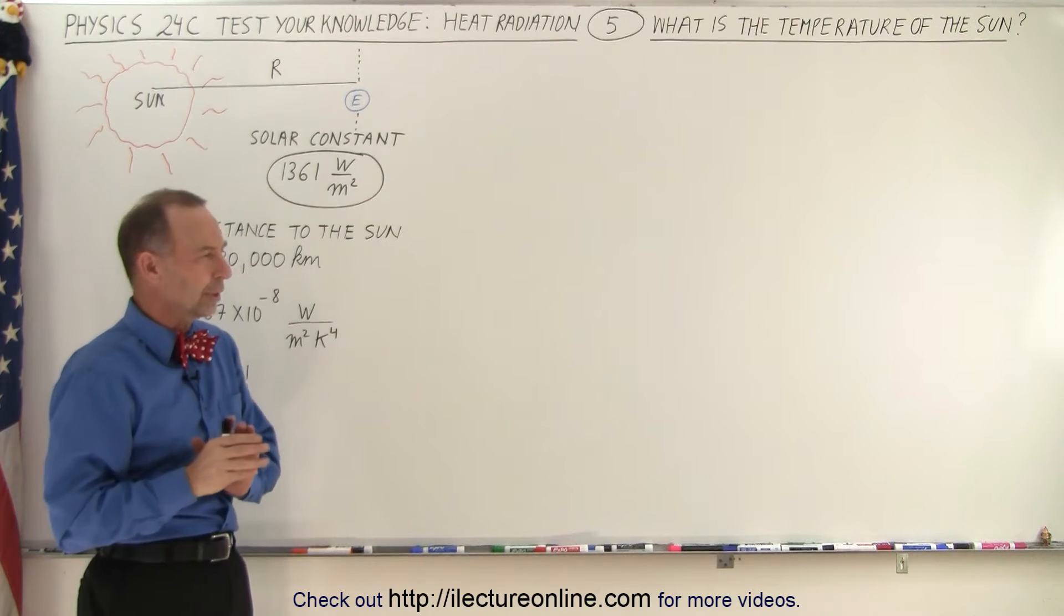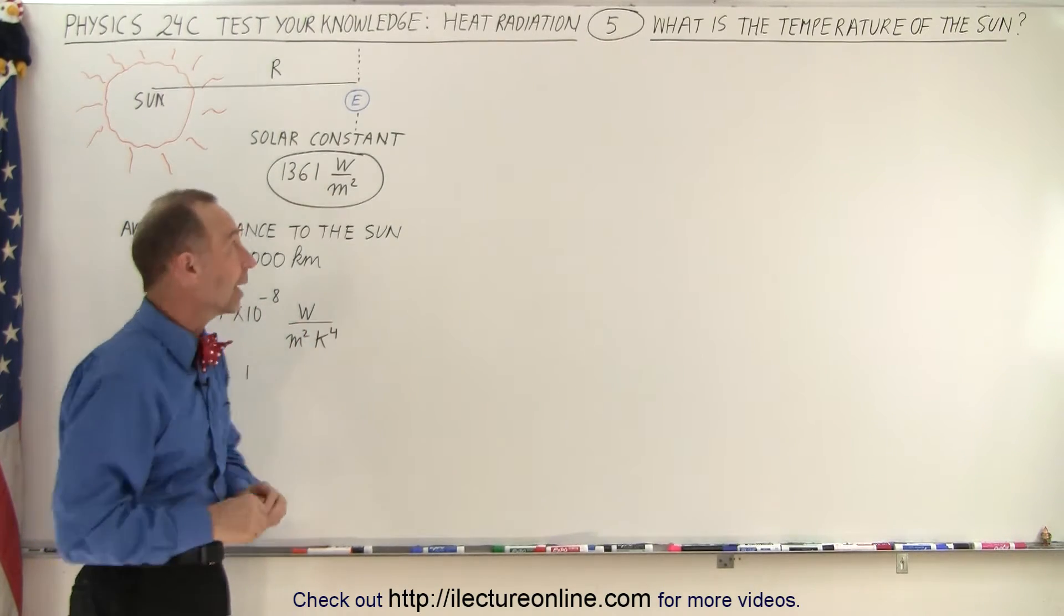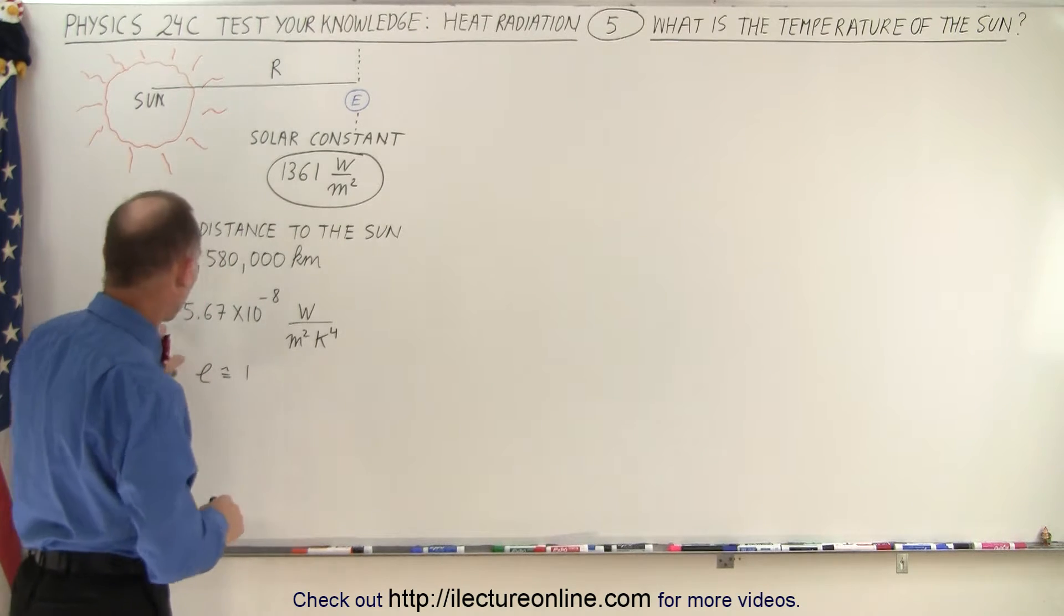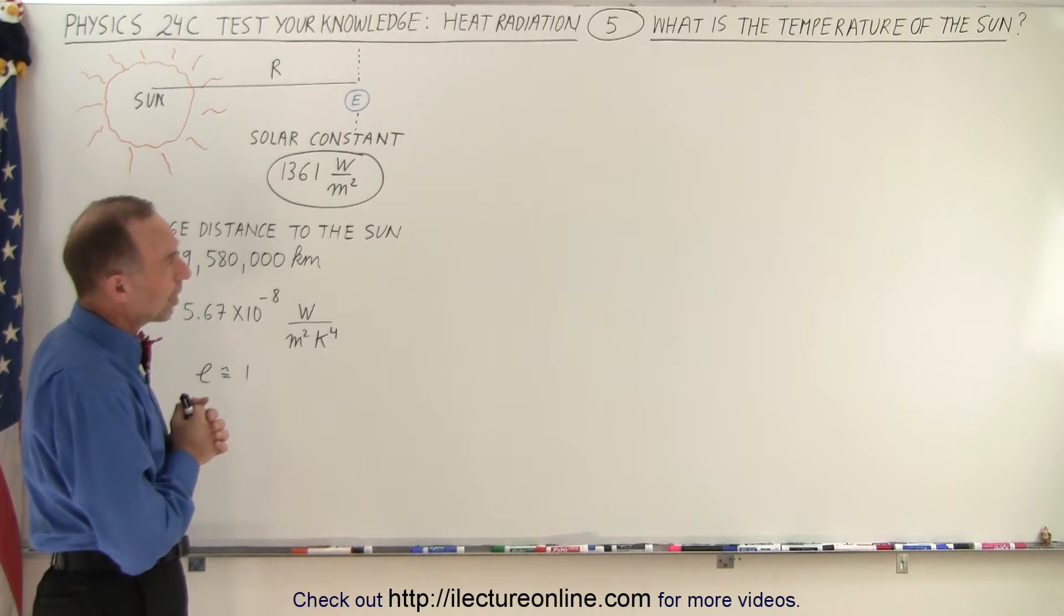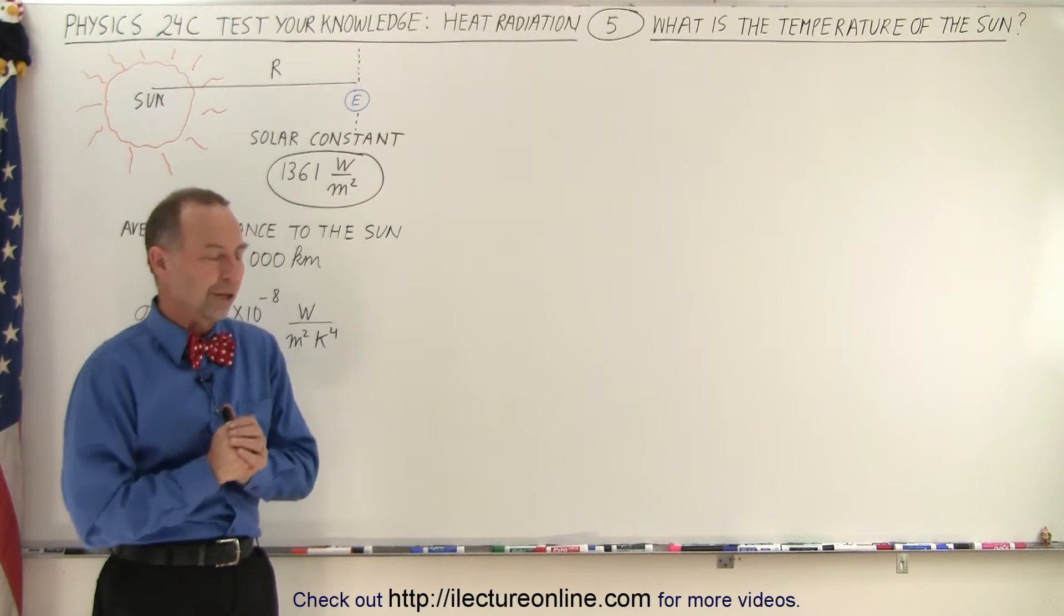Of course, you're also going to need to know the radius of the sun, and that will come later. You also need to know sigma, which is the constant used in Stefan-Boltzmann's law. So how do we determine the temperature of the sun?